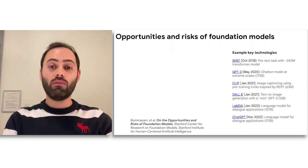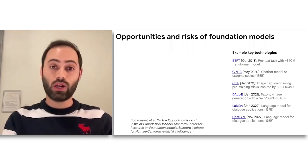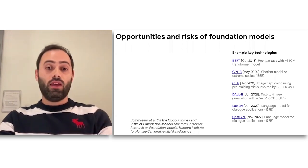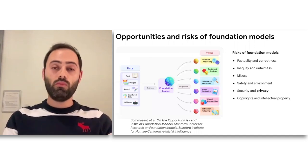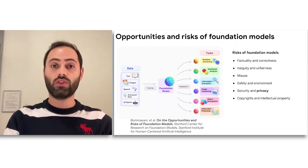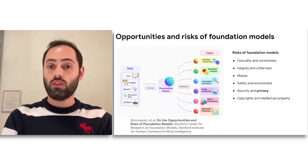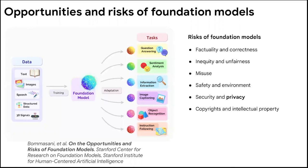There are a few of them from Google, from OpenAI, and from many other companies, whether startups or big tech companies. Now, these models do come with some risks, many of which are somewhat understood and many of which are being currently researched. Some of these risks include the factuality or correctness of the answers they give, the inequity or unfairness they may create, being abused or misused, some safety questions, security and privacy concerns, and last but not least, copyrights and intellectual property.